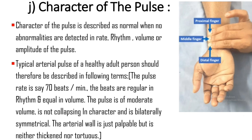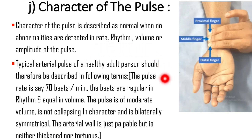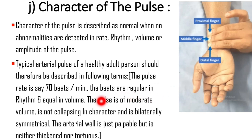Finally, we should comment on the character of the pulse. The character of the pulse is described as normal when no abnormalities are detected in rate, rhythm, volume, or amplitude. A typical arterial pulse of a healthy individual should be described as follows — for example: the pulse rate is 70 beats per minute. The beats are regular in rhythm and equal in volume. The pulse is of moderate volume and is not collapsing in character and is bilaterally symmetrical. The arterial wall is just palpable but neither thickened nor tortuous.